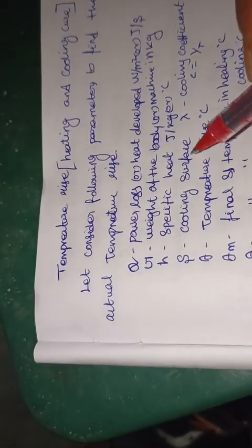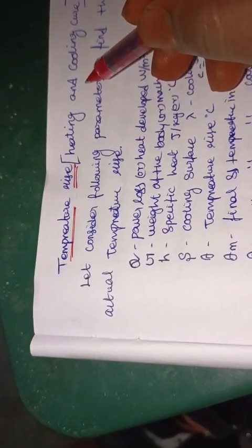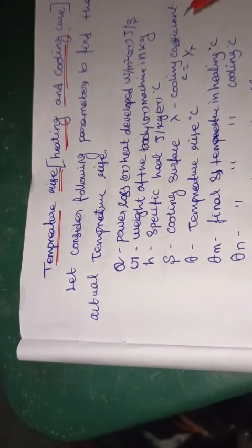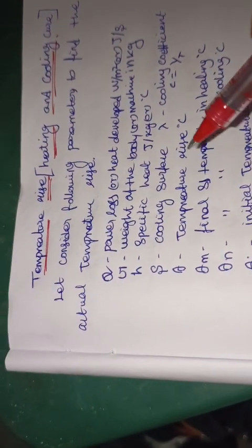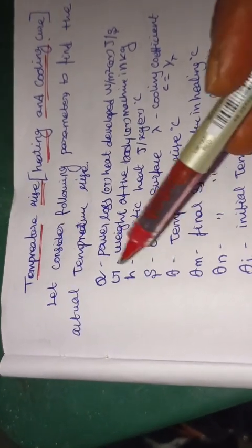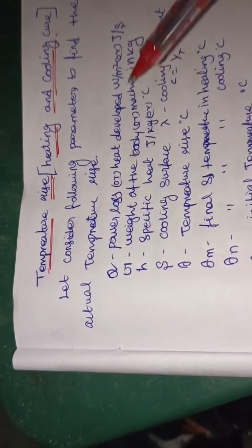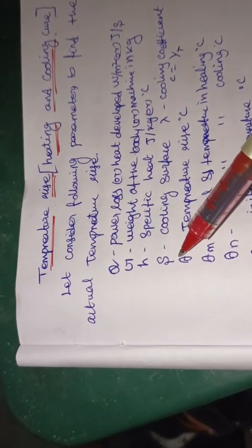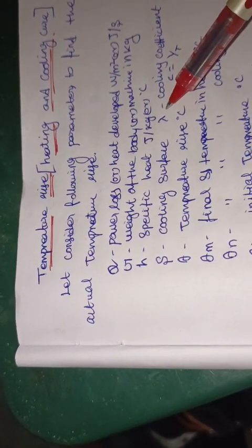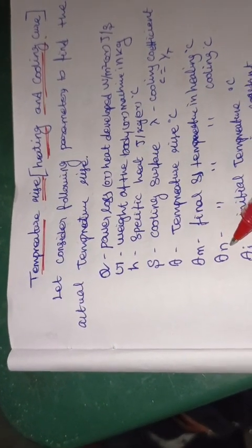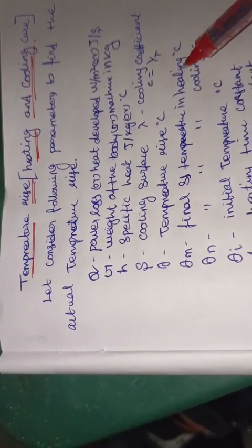Dear students, today we are going to discuss about temperature rise — heating and cooling curves in the electrical machine. Let us consider the following parameters to find the actual temperature rise: Q is the power loss or heat developed in watts per square meter or joules per second; G is the weight of the machine part; H is the specific heat; S is the cooling surface; and lambda is the cooling coefficient.